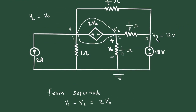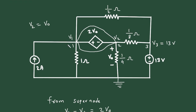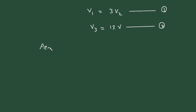V3 is equal to 13V — let's call this equation number 2. Now let's assume the directions of current: this is current I1, this is current I2, this is current I3, and this is current I4. We have to assume all the currents toward the reference node. Now we will apply KCL to this supernode.